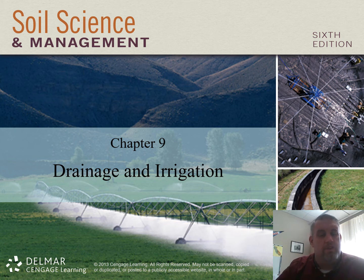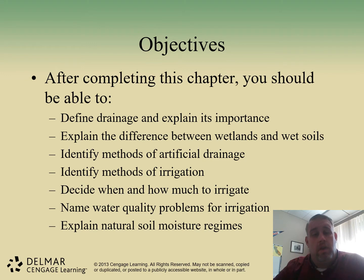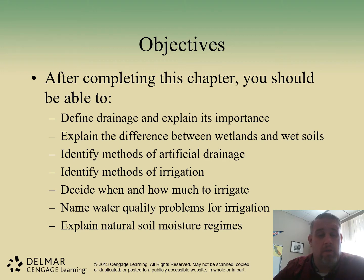Hi and welcome to Soil Science and Management, Chapter 9. Today we're going to be discussing drainage and irrigation. After we complete this chapter, you should be able to understand drainage and why drainage is important for soils, explain the difference between a wetland and a wet soil, how to utilize artificial drainage, different methods of irrigation, how much to irrigate, and water quality problems that you can face in irrigation.